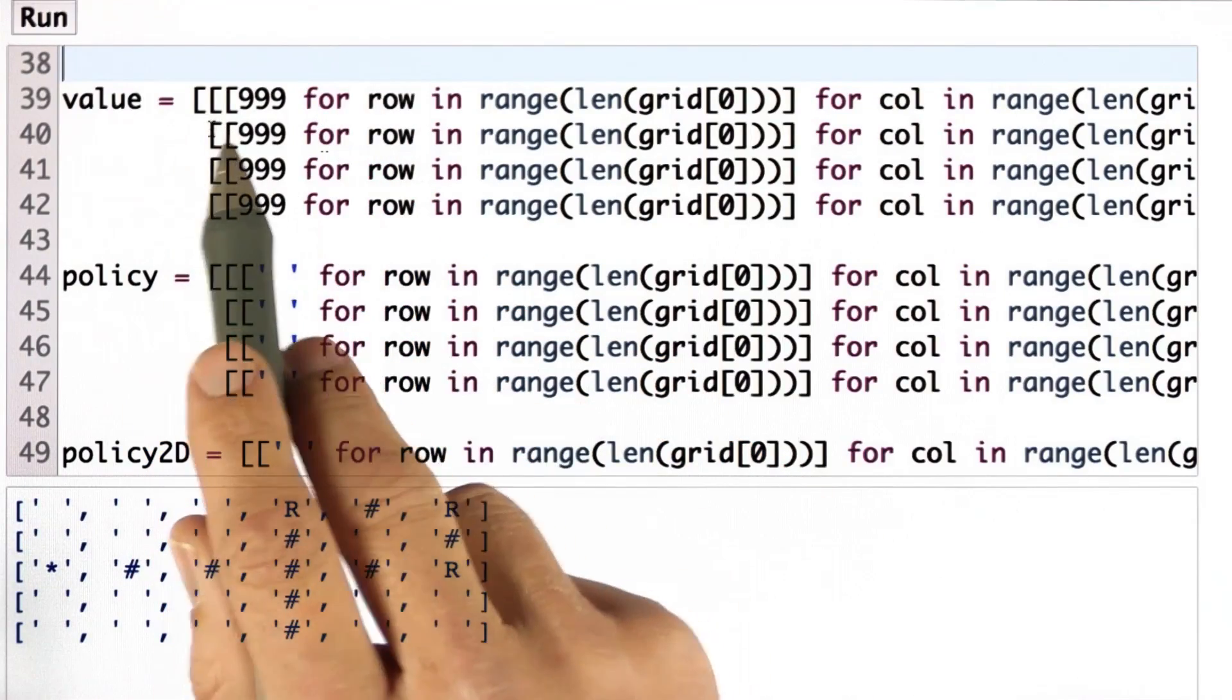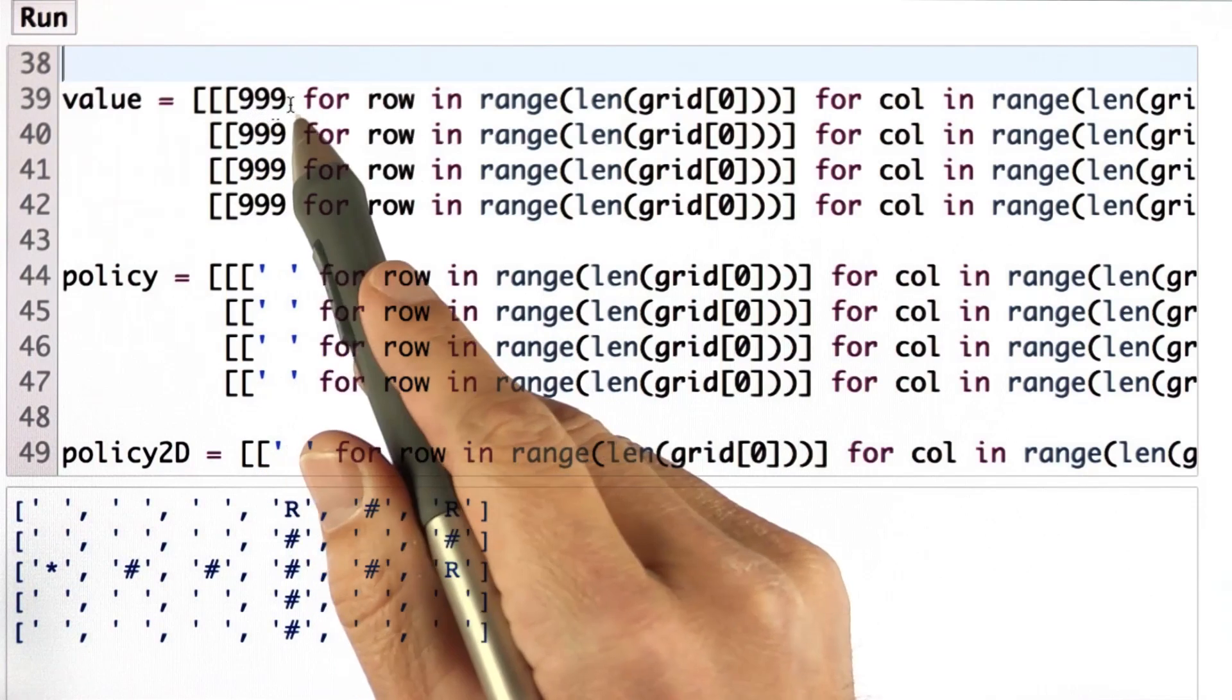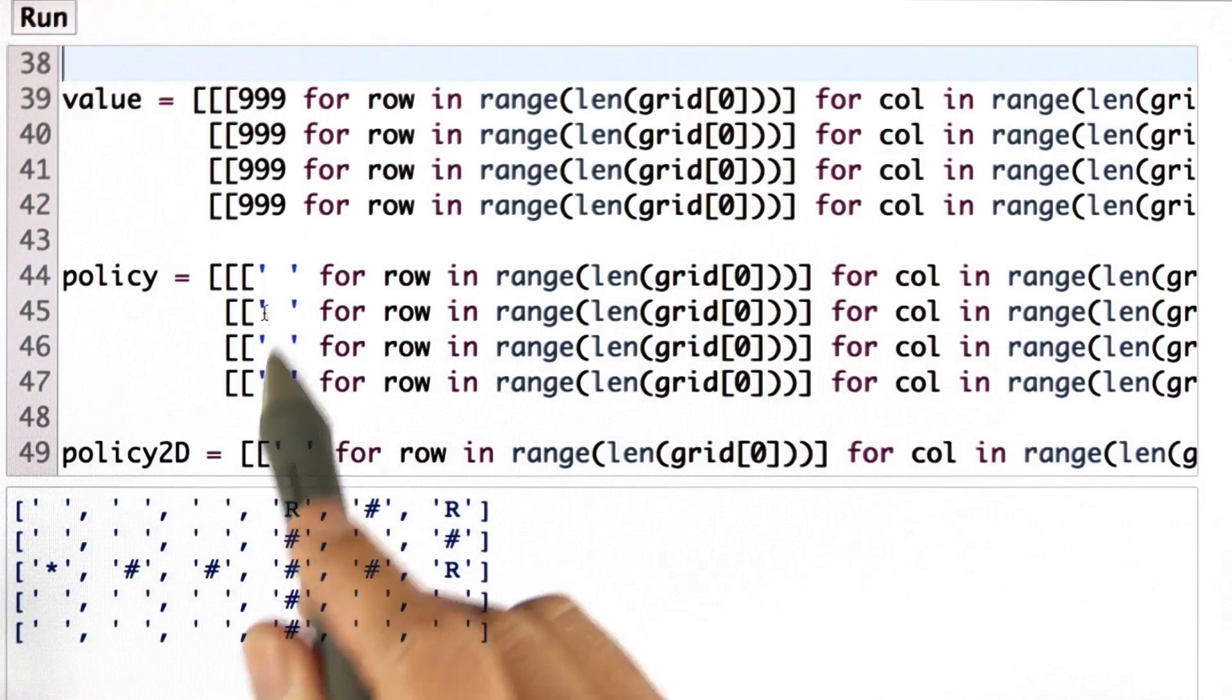And here's my solution. I have the value function that is utilized three-dimensional as lots of 999s. The policy is a similar function in 3D.